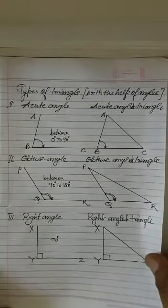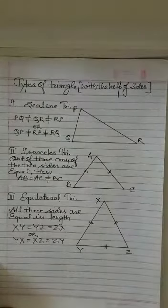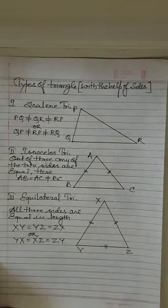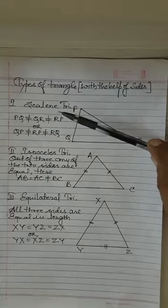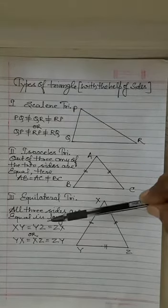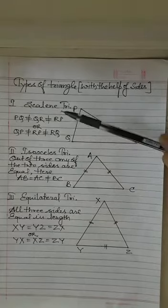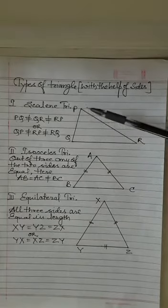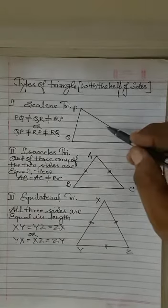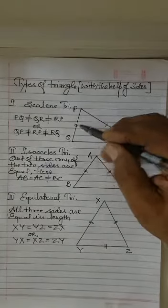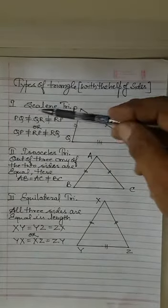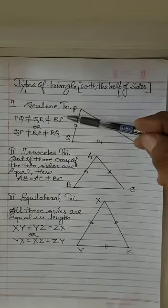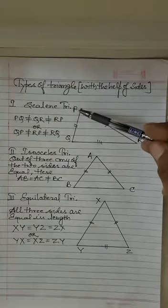Now I am taking type of triangles with the help of the sides. When I am taking sides there are three types of the triangles I can make. One is a scalene triangle, isosceles triangle and equilateral triangle. What is a scalene triangle? A scalene triangle is a triangle in which all three sides are not equal. They are having the different different lengths. So PQ is not equal to QR is not equal to RP. So it is a scalene triangle.